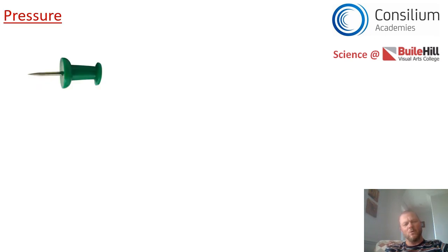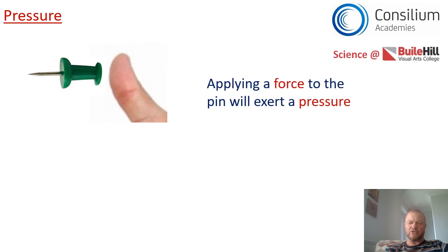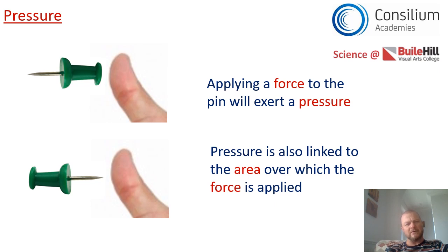Let's try and work out what this word pressure means. Let's take this drawing pin and if we pushed against it with our thumb we'd be using a force, and that force would exert a pressure onto that drawing pin. What happens if we turn the pin round with the pointy bit pointing towards us and put our thumb against it with exactly the same force? Would the pressure be the same or different? We can say that the area that your thumb is hitting on the drawing pin is different and therefore pressure is going to be linked not just to the force that's applied but the area over which it's applied.